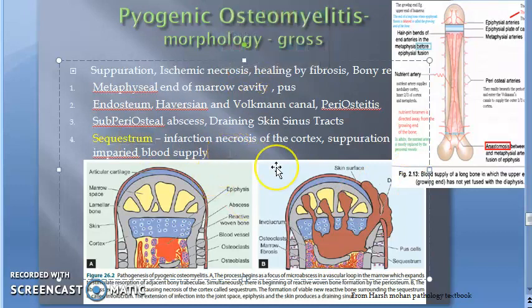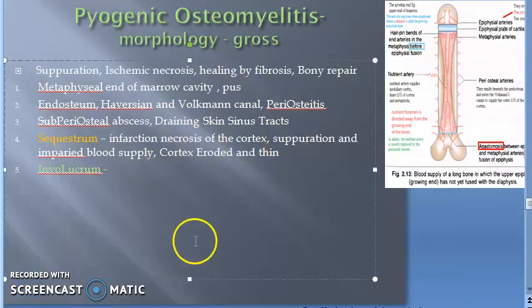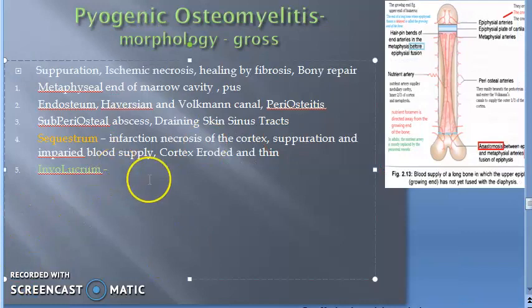The cortex will be eroded and thin. Now let us move on to point 5 according to the textbook — the formation of the involucrum.